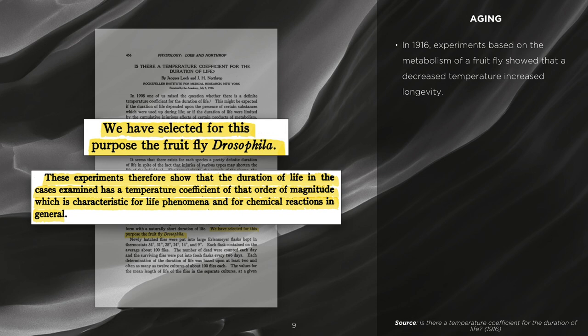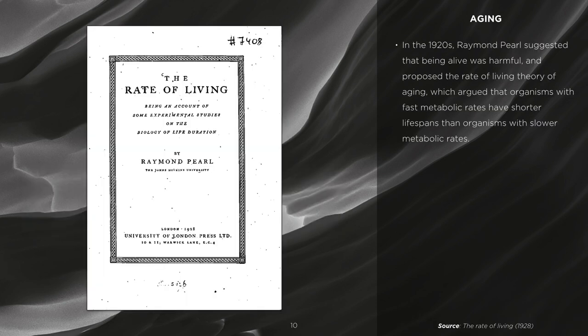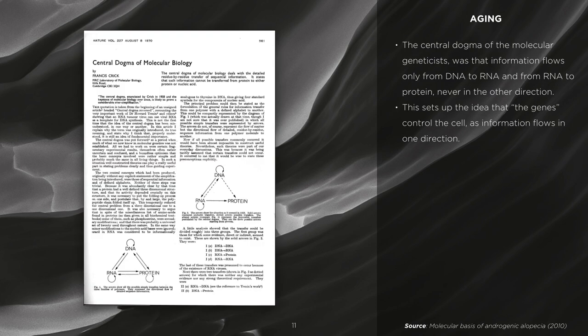In 1916, experiments based on the metabolism of a fruit fly showed that a decreased temperature increased longevity. In the 1920s, Raymond Pearl suggested that being alive was harmful and proposed the rate of living theory of aging, which argued that organisms with fast metabolic rates have shorter lifespans than organisms with slower metabolic rates. Low temperature and decreased metabolism ties in nicely with the central dogma of molecular biology, which suggests that information flows from the DNA to the RNA and from the RNA to the protein of the cell, but never in the other direction. This also suggests that the environment has very little to do with the growth of the organism, as the genes already contain the information and they cannot be changed.